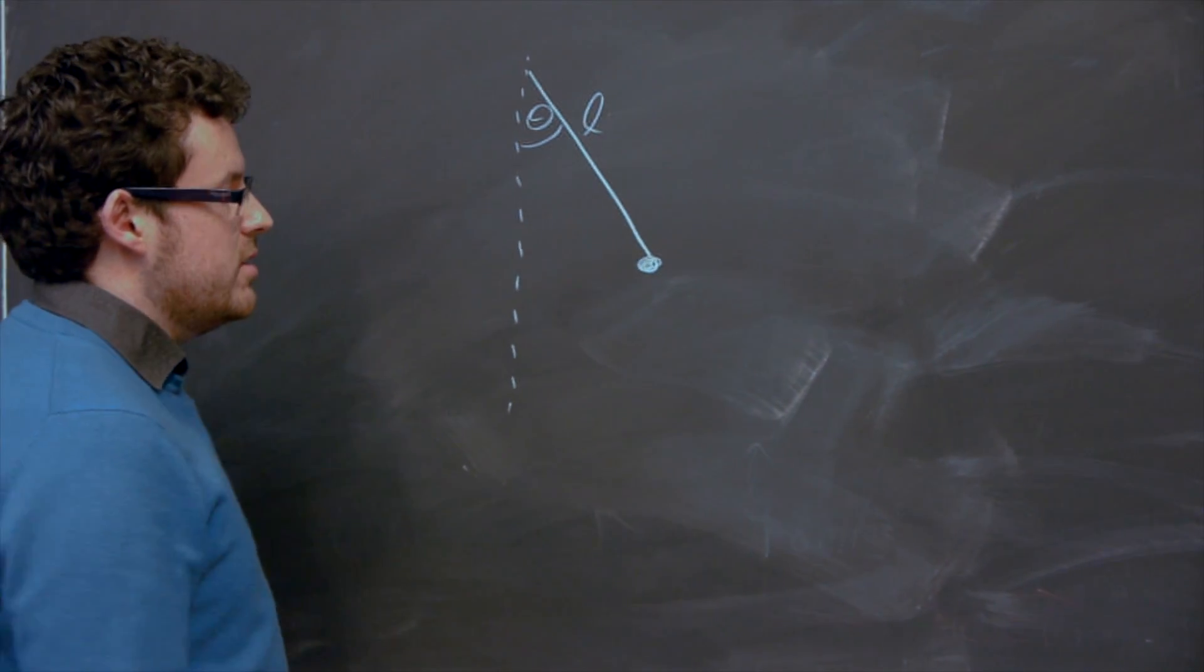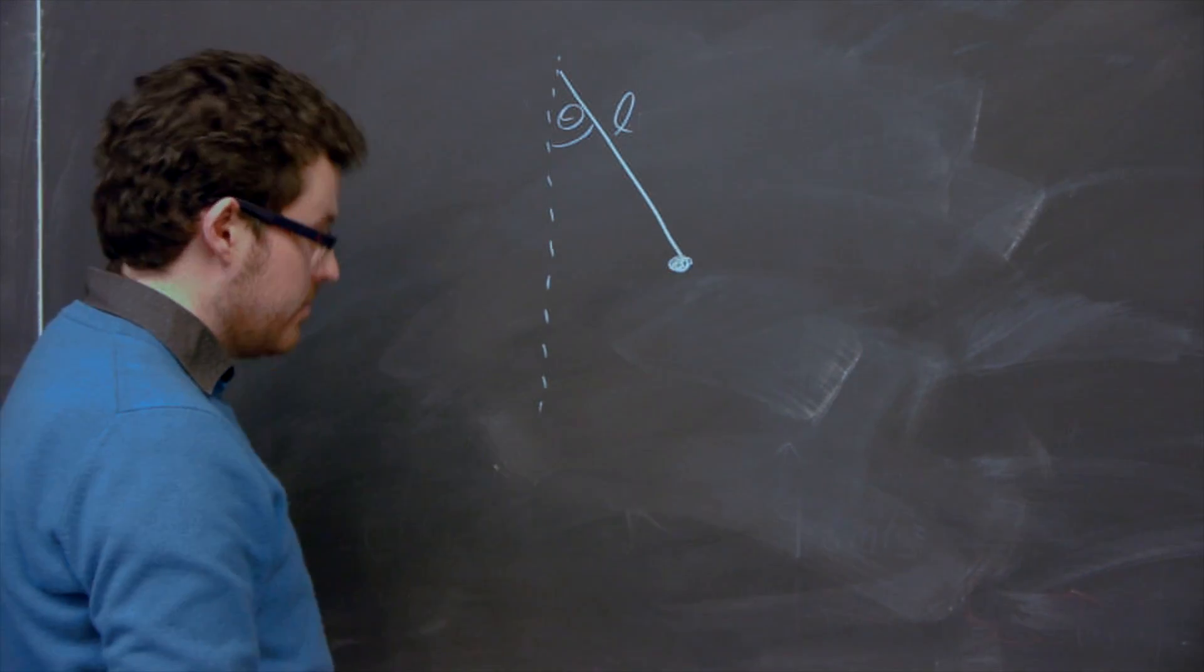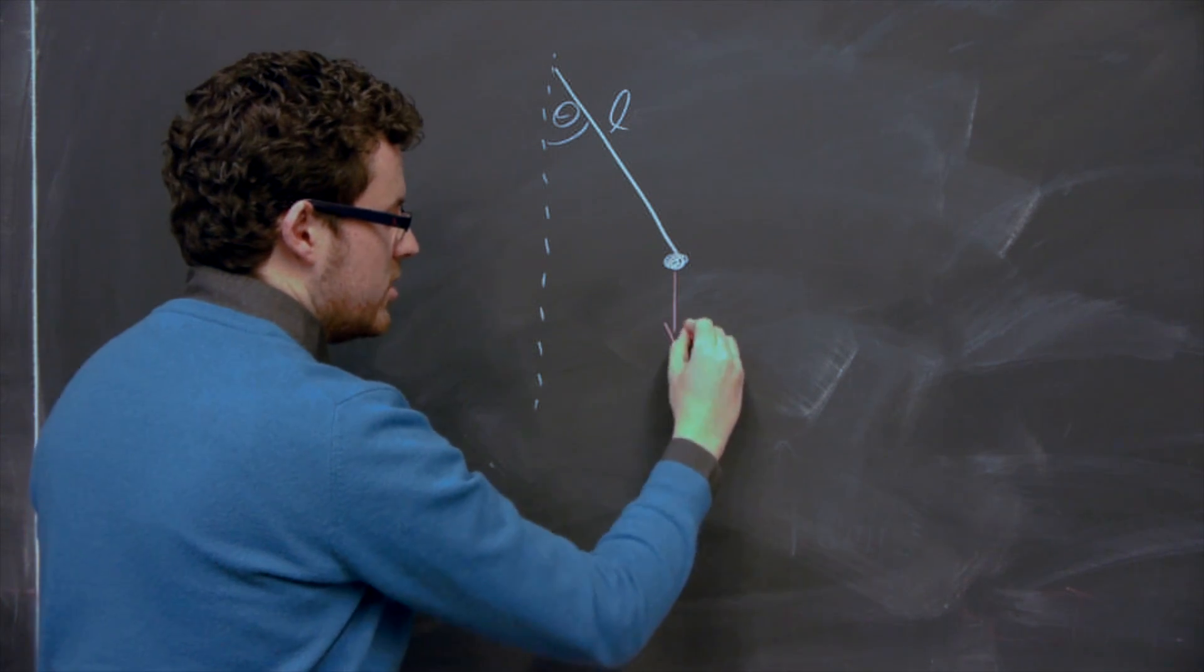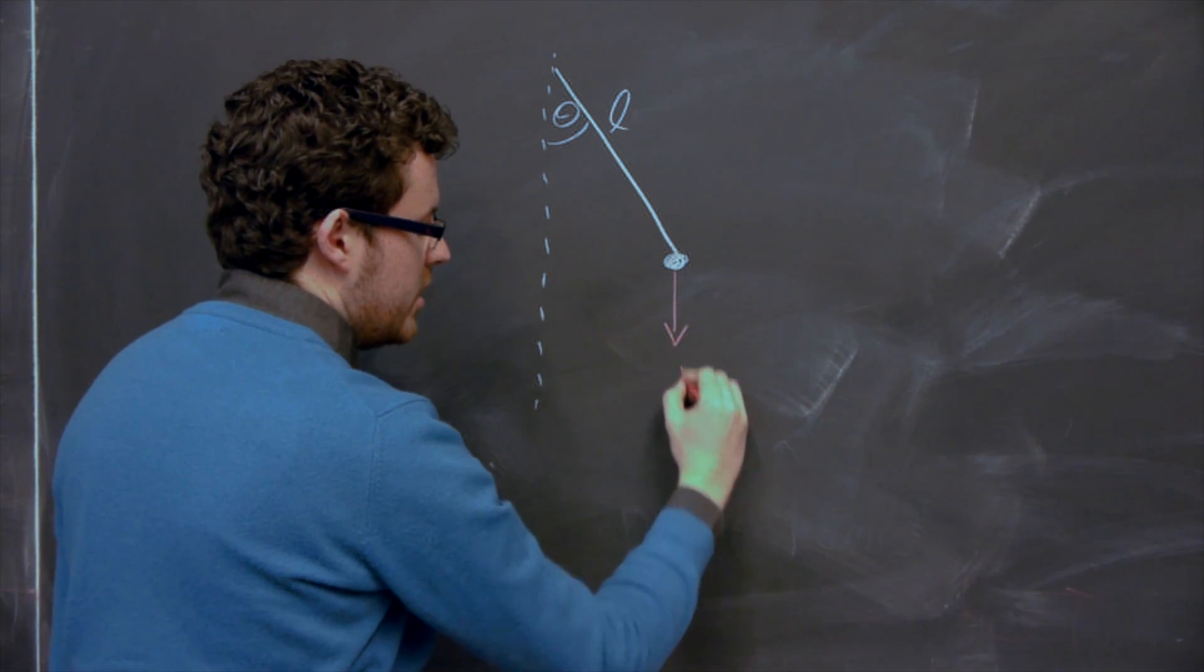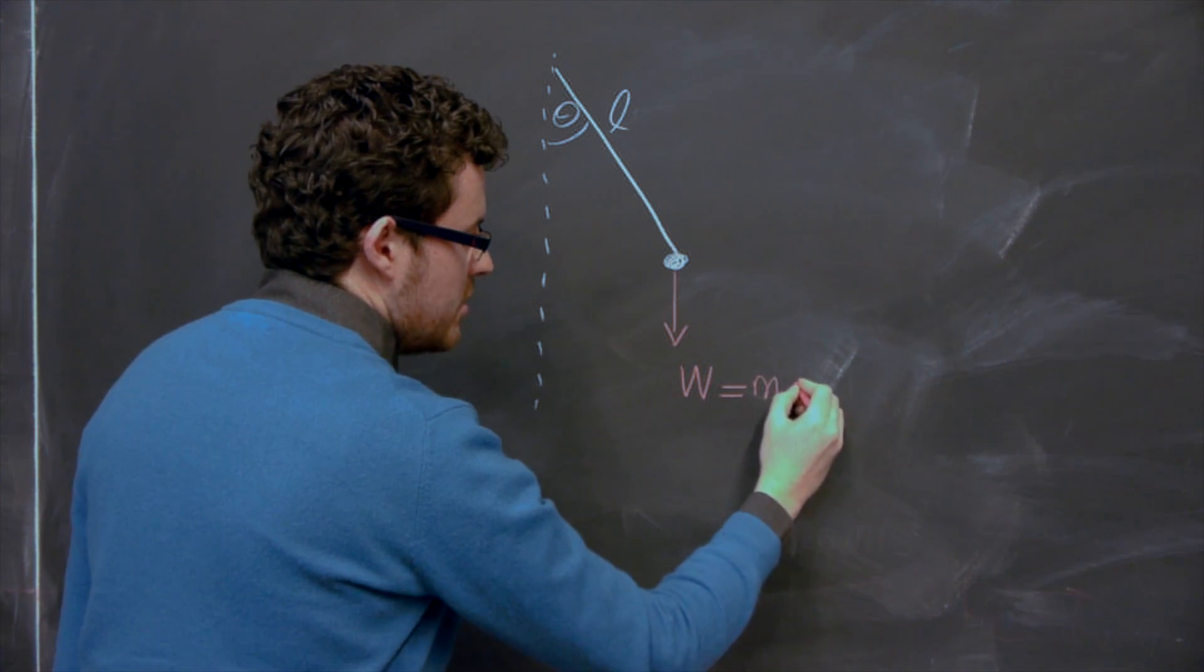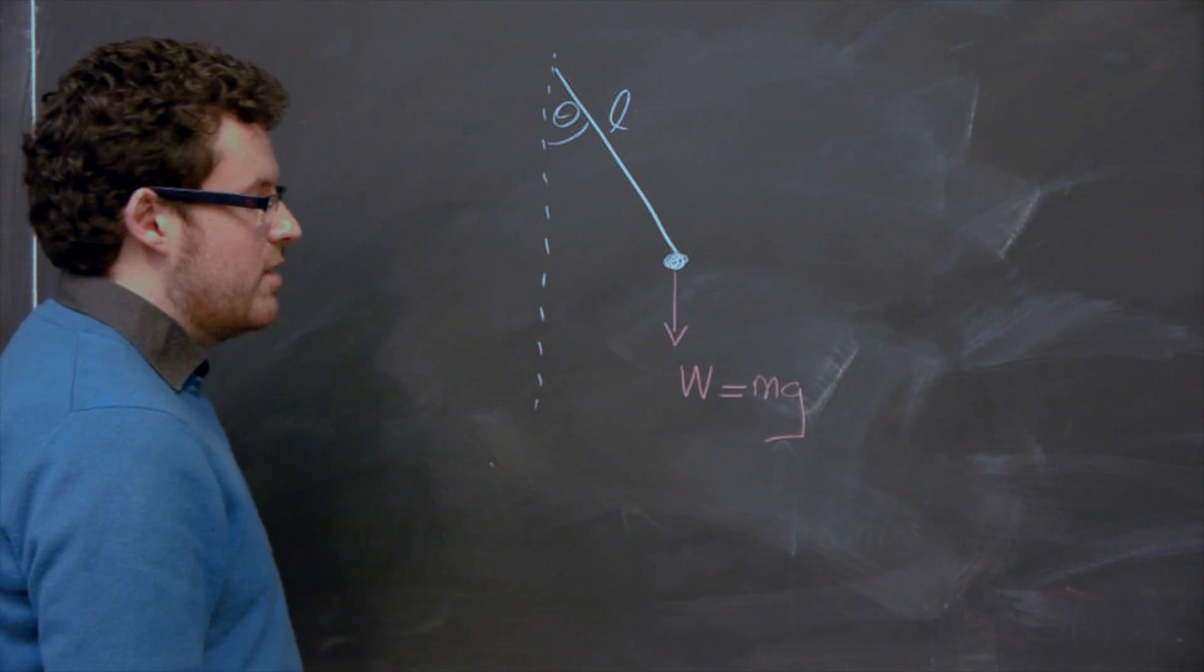So the first thing we need to do here is we need to consider the forces that are acting on this mass here. So the most obvious one, of course, being the weight, which will act straight down. And it's given by where M is the mass of the ball here, and G is acceleration due to gravity.